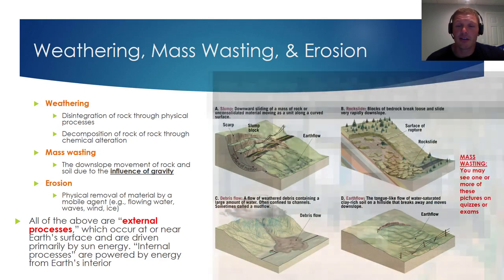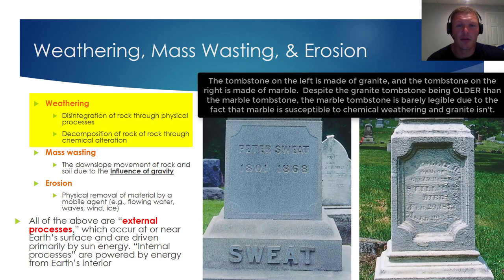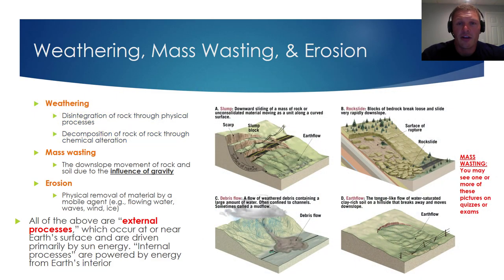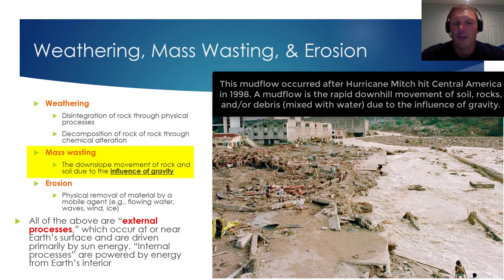Let's start off by considering weathering, because it's typically the first step in the movement of material and the reshaping of Earth's surface. There are two primary forms of weathering: the disintegration of rock through physical processes — examples include frost wedging or biological activity — and the decomposition of rock through chemical alteration. The examples we focus on were oxidation and the effects that carbonic acid can have on rocks and minerals.